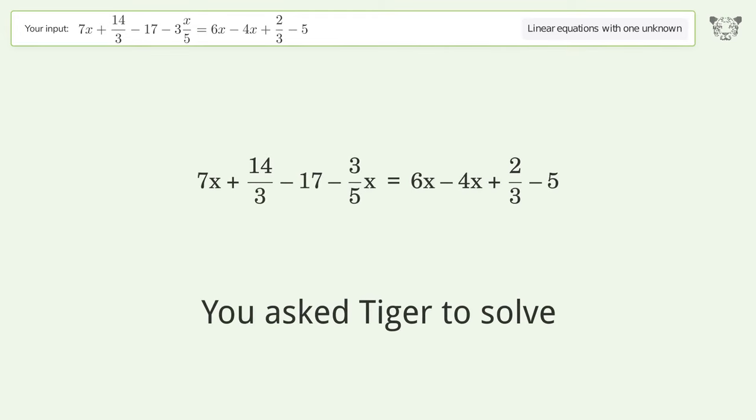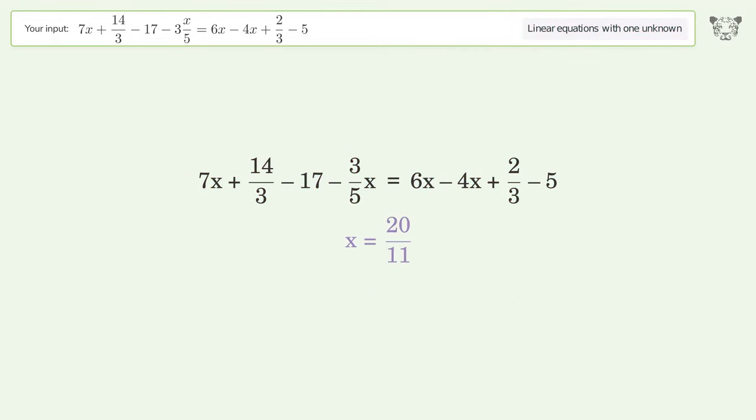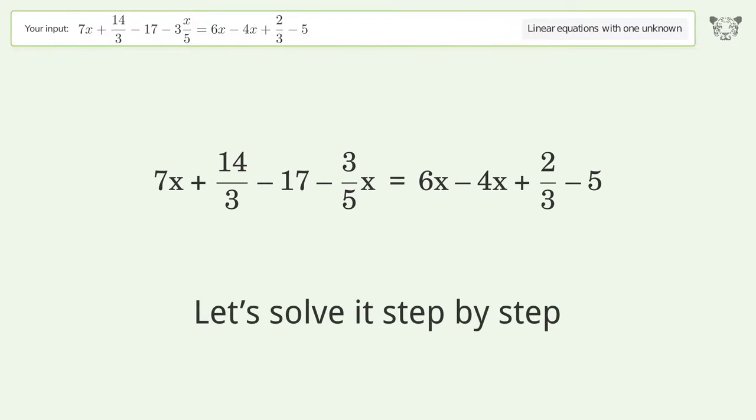You asked Tiger to solve. This deals with linear equations with one unknown. The final result is x equals 20 over 11. Let's solve it step by step.